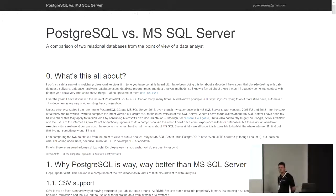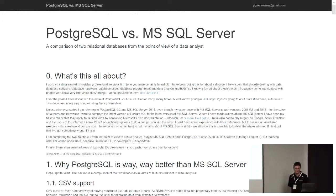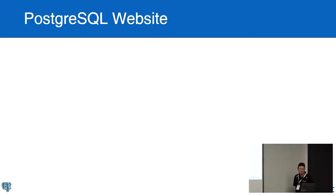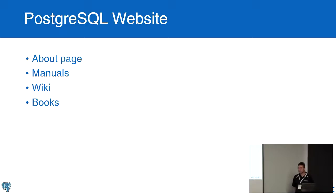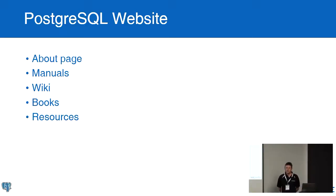Microsoft is one of our sponsors, so they play in some space. But in our world, Postgres is definitely the better option. So what's available on the Postgres website? There's an About page, manuals, the Wiki — there's a lot more on the Wiki than just the migrating page. There's a list of books, and a list of other resources. This is already probably the best place to start. Just go to the Postgres website — there's really a lot of content there.